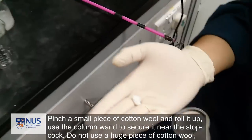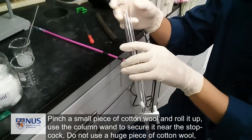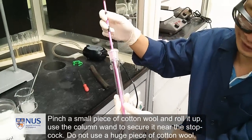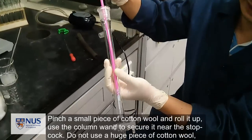Now show time. Pinch a small piece of cotton wool and roll it up, and use the column funnel to secure it near the stopcock. Do not use a huge piece of cotton wool.